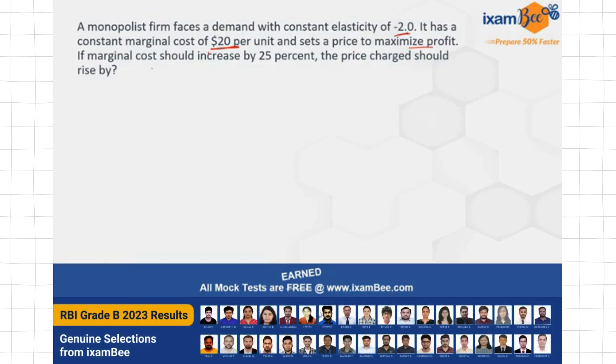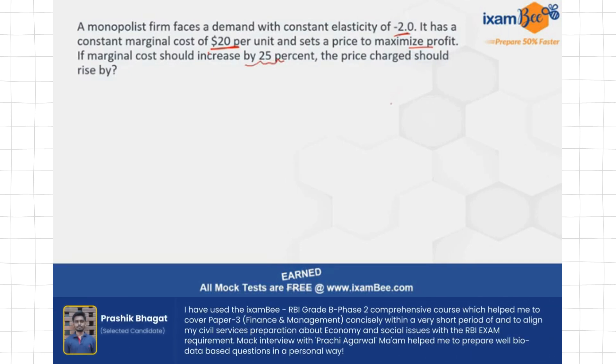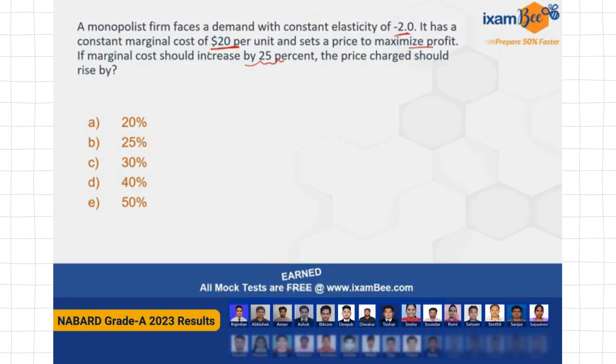So if the marginal cost should increase by 25%, then by how much should the price charged rise? What percentage is what you have to find out. So options are 20%, 25%, 30%, 40%, 50%. What do you think should be the answer? If you know how to solve such questions, pause this particular video, solve it and answer it, and then come back.